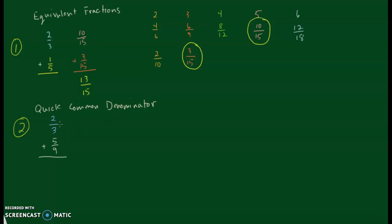For the quick common denominator strategy, we take each fraction and multiply it by the denominator of the other fraction. For two thirds, we multiply both the numerator and denominator by nine: 2 times 9 is 18, and 3 times 9 is 27. For five ninths, we multiply by the other denominator, three: 5 times 3 is 15, and 9 times 3 is 27. Now we can add: 18 twenty-sevenths plus 15 twenty-sevenths is 33 twenty-sevenths.